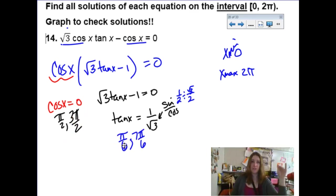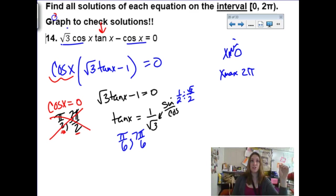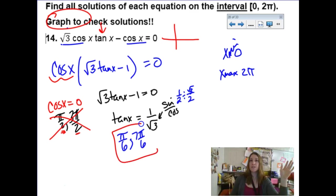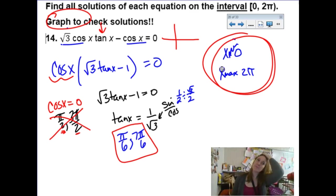Normally I would just circle these four answers, but I have to go back and think. Remember the first question we did — we found answers for both factors, but if I go back to the original problem there's a big tangent function. Tangent is not defined at π/2 or 3π/2, so we have to cross those off because they're not going to work for the equation as a whole. That's why it says make sure you graph to check — when you graph, you'll only see two places where it intersects over this domain, not four.